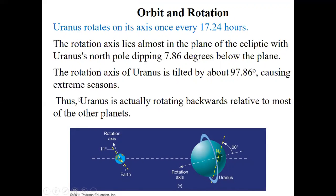Orbital and rotational period. Uranus rotates on its axis once every 17.24 hours. The length of a day on Uranus is 17.24 hours. Most interestingly, the rotational axis lies almost in the plane of the ecliptic. The ecliptic is the path that the sun is moving along the year. This planet's rotational axis lies almost in the plane of ecliptic with Uranus north pole dipped a little bit.